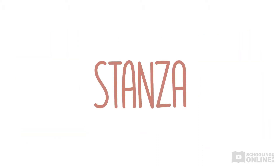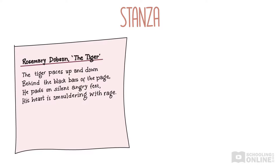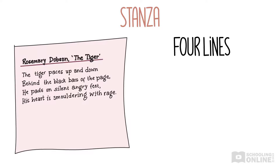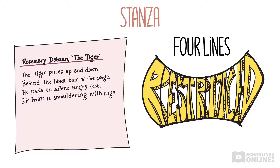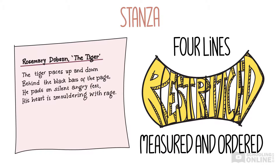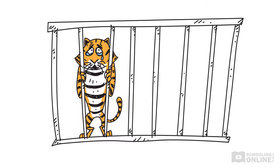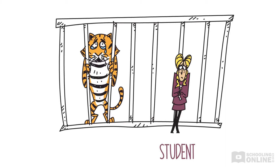Let's take a look at this stanza from Rosemary Dobson's poem, The Tiger: 'The tiger paces up and down behind the black bars of the page. He pads on silent, angry feet. His heart is smouldering with rage.' This stanza has only four lines. It feels short and tight — restricted even. All the lines in the stanza are the exact same length; it's measured and ordered. So why does Dobson structure her stanza like this? Think about what the stanza is about — it depicts a captive tiger, trapped in a cage. Dobson wants us to get a sense of how imprisoned the tiger feels. The way the stanza is so strictly ordered reflects the tiger's entrapment. She makes the poem like the tiger's cage.